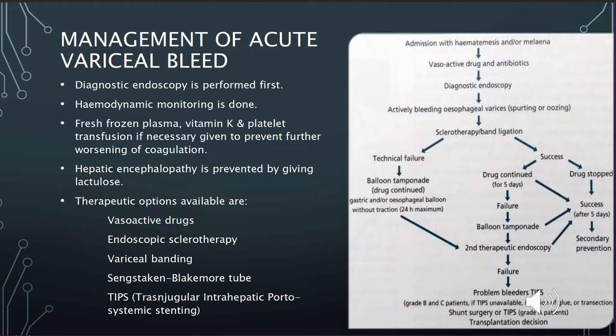To confirm an acute variceal bleed, firstly an endoscopy is performed. Next, haemodynamic monitoring is done. Fresh frozen plasma, vitamin K, and platelet transfusion if necessary are given to prevent further worsening of coagulation. Hepatic encephalopathy is prevented by giving lactulose. Therapeutic options available are vasoactive drugs, endoscopic sclerotherapy, variceal banding, Sengstaken-Blakemore tube, or TIPS.